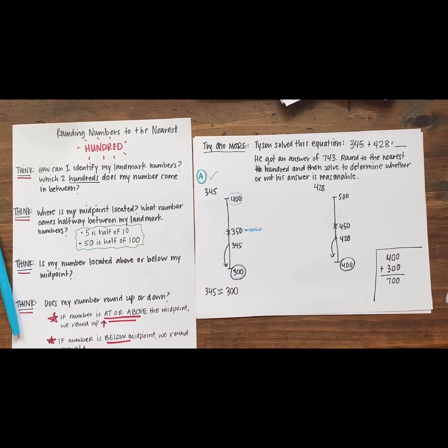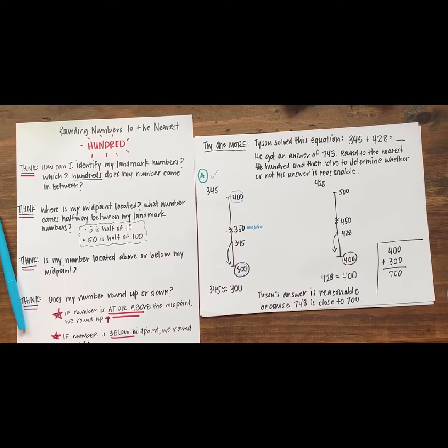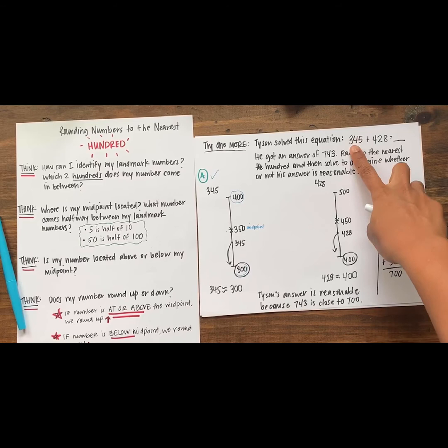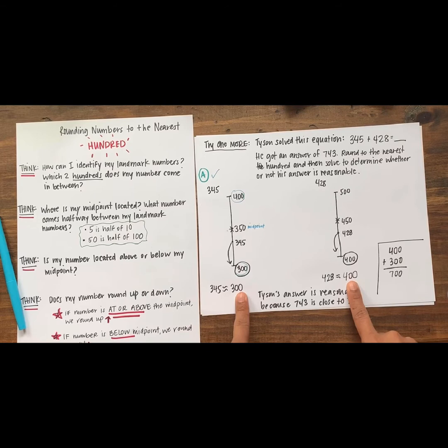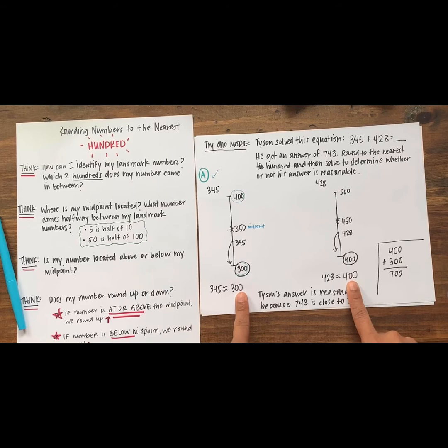How did rounding help us determine whether or not his answer was reasonable? Yes, that's right. Rounding helped us decide whether or not Tyson's answer was reasonable because we were able to round 345 and 428 to the nearest hundred, which gave us numbers that were multiples of hundreds and easier to work with. We could quickly add to figure out whether or not his answer was reasonable.